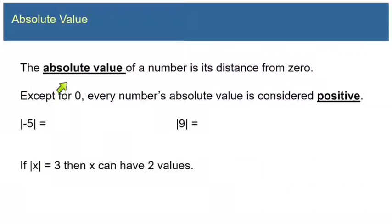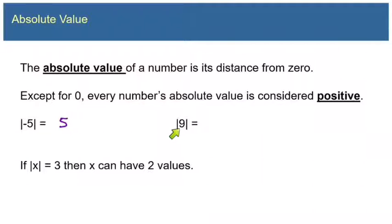The vertical bars are called absolute value bars, and they indicate a number's distance from zero. A negative indicates that the number is to the left of zero on the number line, and a positive number is to the right. We want a number that indicates not direction left or right, but just distance from zero — and that's what absolute value is. A number without a sign is considered positive. The absolute value of negative five is five, and the absolute value of positive nine is nine.